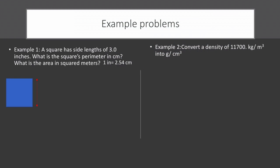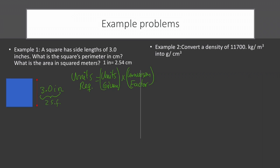Let's do some problems about unit conversion. The first one says: a square has side lengths of 3 inches. What is the square's perimeter in centimeters? The side length of the square is 3.0 inches, which has two significant figures. To do a unit conversion, we use: units required equals units given times a conversion factor written as a fraction. We need to find the perimeter, which is 4 times the length of the square, so we write 4 times 3.0 inches, and we need to convert it to centimeters, so we apply a conversion factor.